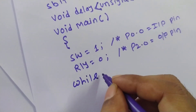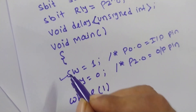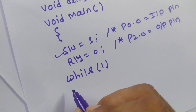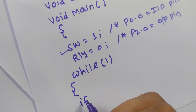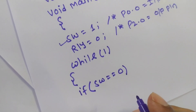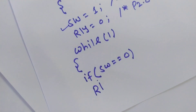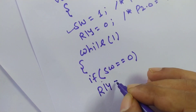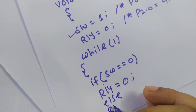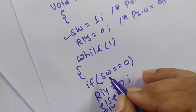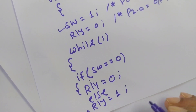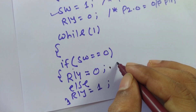We use a while loop because we must continuously check the switch and turn the relay and bulb on or off accordingly. Inside the while loop, an if condition checks: if sw equals zero, meaning when the switch is off, then rly equals zero — the relay is off. In the else branch, rly equals one, meaning the relay turns on and the bulb turns on.